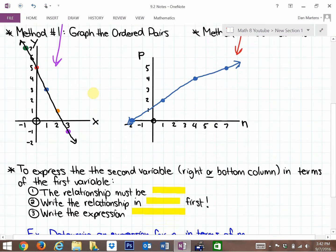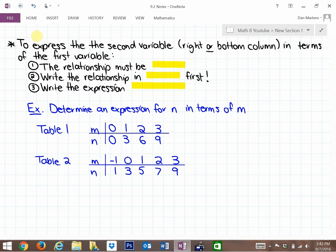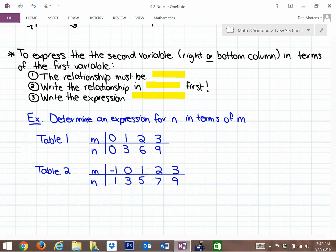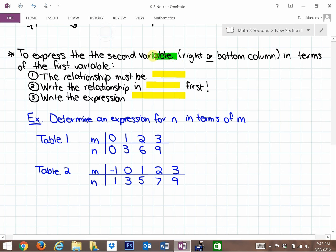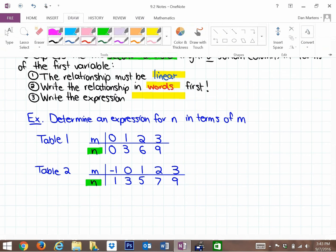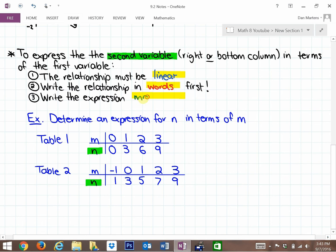So the first thing we looked at today was how do we use tables of values to determine if something has a linear relationship. The next thing we're going to do is determining an expression. To express the second variable, the right or bottom column, in terms of the first variable, the first thing that has to be true is that the relationship must be linear. The next thing that you're going to want to do is write the relationship in words first. And then once we have it in words, we can write the expression mathematically.